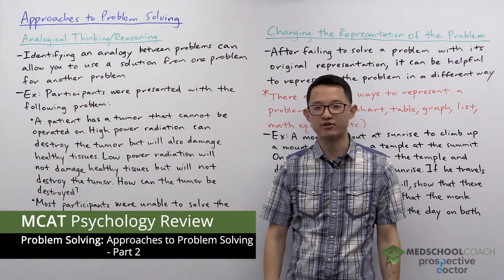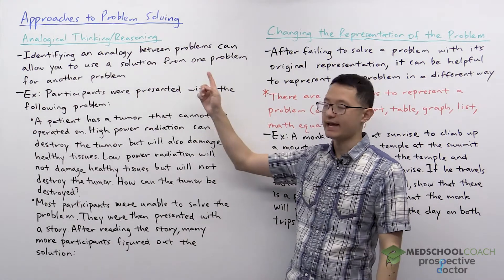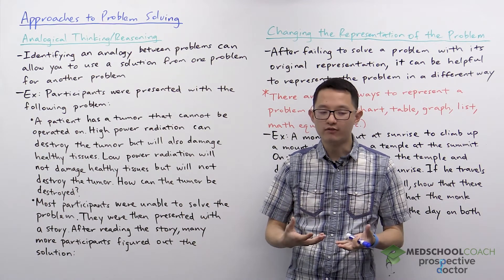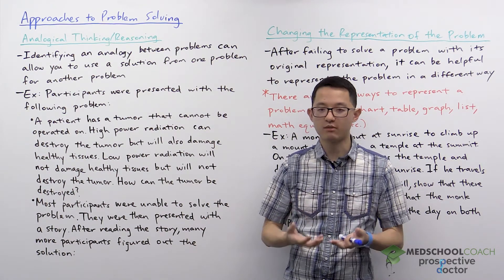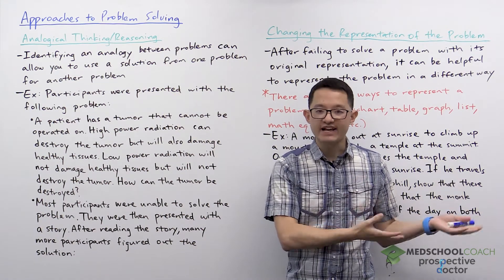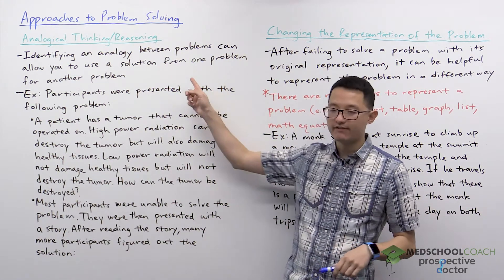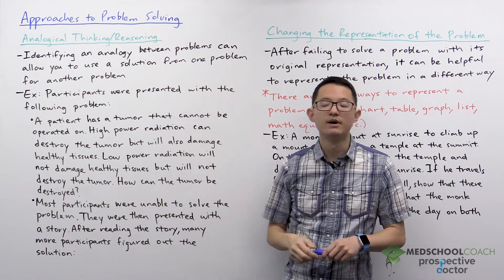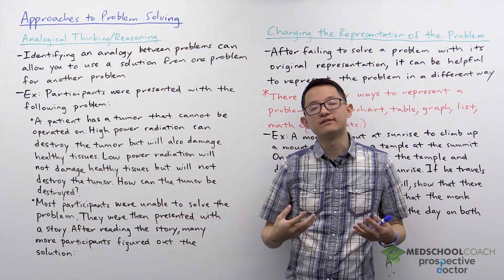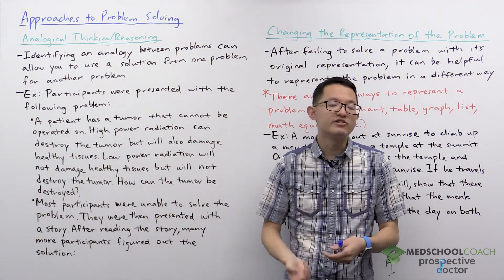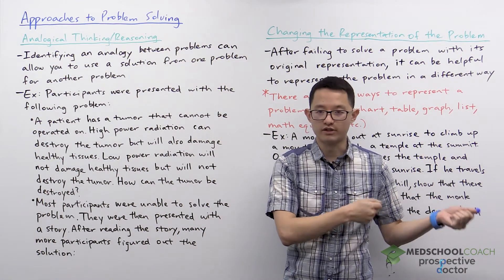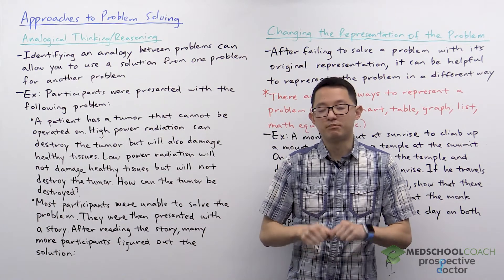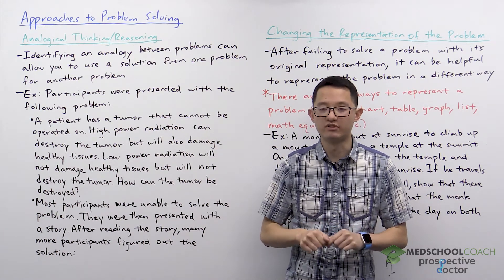In this video, we're going to discuss two additional approaches to problem solving. The first is analogical thinking or reasoning. Sometimes when you're trying to solve a problem, it can be helpful to identify an analogy between the problem you're trying to solve and another problem that has been solved, because this allows you to borrow a solution that has worked for another problem. Here we're going to go over a previous study that shows how powerful this approach can be.